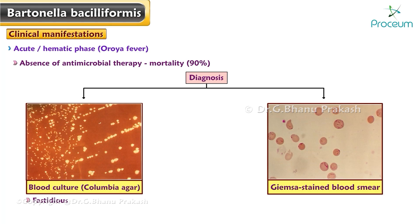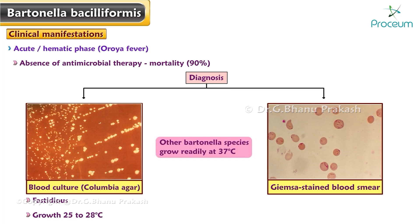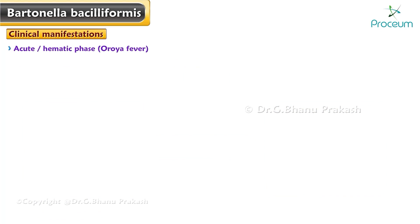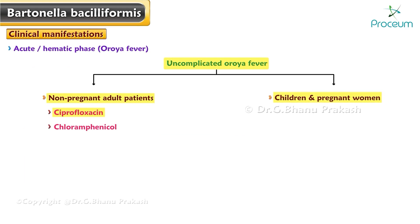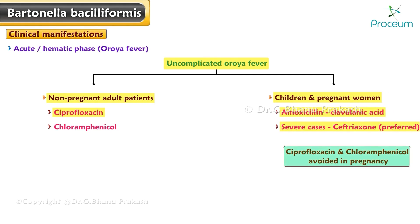Bacilliformis is fastidious and requires Columbia agar, an enriched blood medium for growth, which occurs most readily at 25 to 28 degrees Celsius, unlike other Bartonella species that grow at 37 degrees Celsius. Treatment of choice is ciprofloxacin for uncomplicated Oroya fever in non-pregnant adults; second-line is chloramphenicol. For children and pregnant women, first-line treatment is amoxicillin-clavulanic acid, and in severe cases, ceftriaxone is preferred. Ciprofloxacin and chloramphenicol should be avoided in pregnancy.